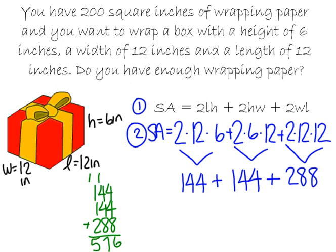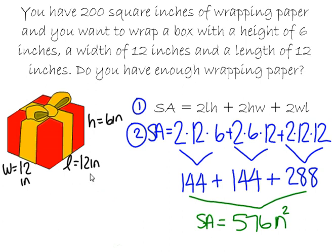We end up with a surface area of 576. The last step is to put units, so inches squared. If we want to answer this question completely, we would find the difference. If I did 576 and subtracted 200, I could say no, I don't have enough wrapping paper and I'm short by 376 square inches.